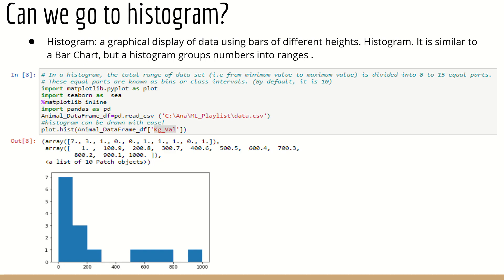The next chart type is histogram. A histogram is a graphical display of data using bars of different heights. It is similar to a bar chart, but here we group numbers into ranges. In a histogram, the total range of the dataset is divided into 8, 10, or 15 equal parts — these equal parts are called bins. Remember: a bin is nothing but a range — the equal parts we split the data into.